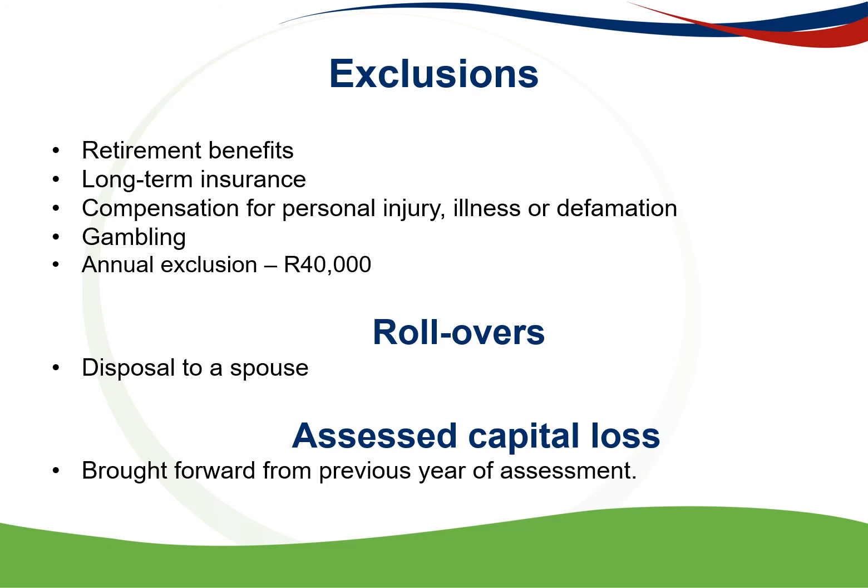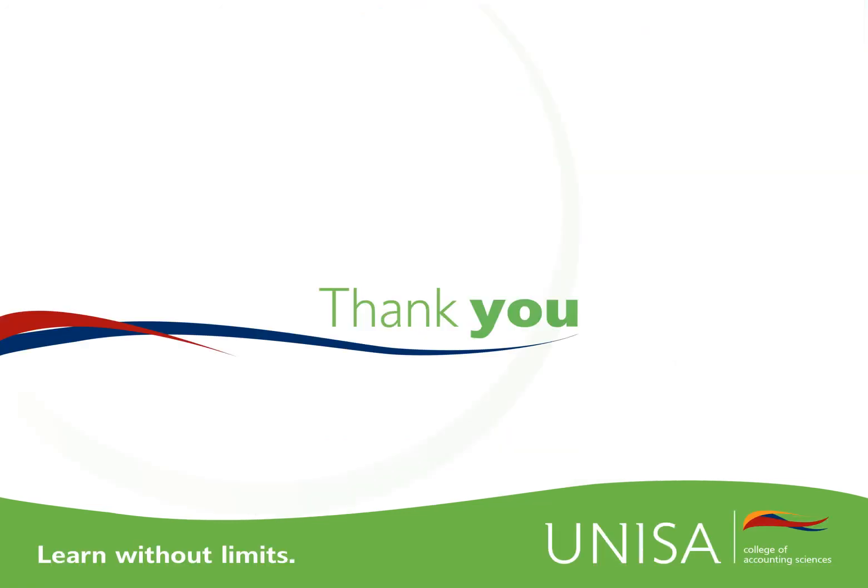Then there are rollovers for natural persons — we are looking at the disposal between spouses. Whatever the base cost was for the one spouse disposing to the other spouse, the receiving spouse will have the same base cost as the disposing spouse. Lastly, the assessed capital loss brought forward from the previous year of assessment must also be taken into account as a last item. That concludes the capital gains tax presentation.